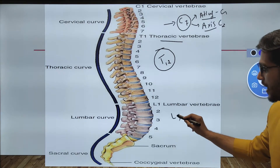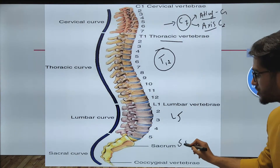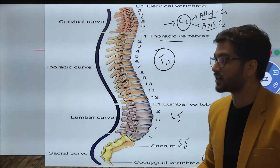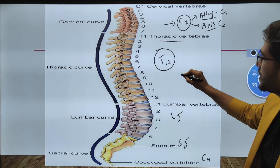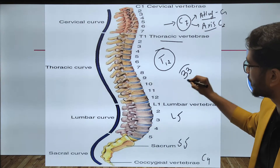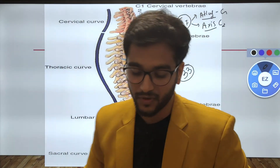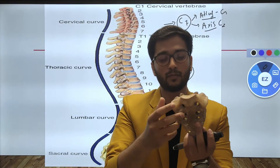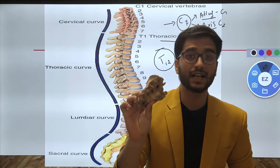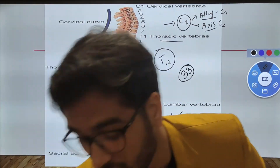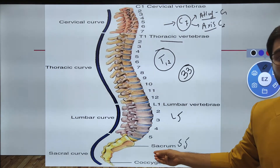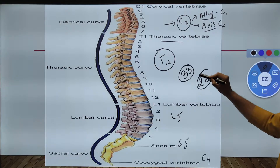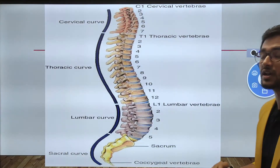Below that there are 5 lumbar vertebrae, 5 sacral vertebrae, and 4 coccygeal bones. The number of vertebrae in infants is around 33. But at adulthood, ossification and fusion take place: the 5 sacral components join together to form a single sacral bone, and the coccyx also fuses together, reducing the total number to 26.